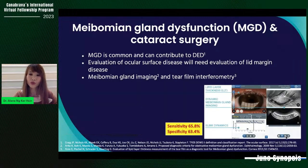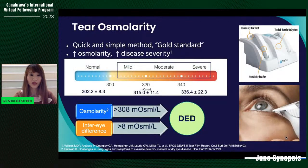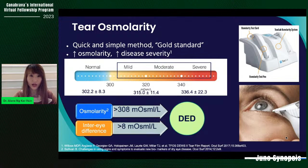Dry Eye Questionnaire 5 or OSD Index are used to screen. A positive symptom score with one of the signs of either reduced tear breakup time, increased osmolarity, or ocular surface staining confirms the diagnosis. Corneal and conjunctival staining have been shown to be informative markers of disease severity in severe dry eye disease. However, staining in mild or moderate dry eye showed poor correlation with disease severity. MGD is considered a leading cause of evaporative dry eye. Meibography allows observation of meibomian gland morphological structure, demonstrating sensitivity of 84.9% and specificity of 96.7%.